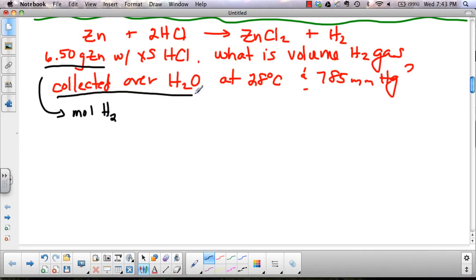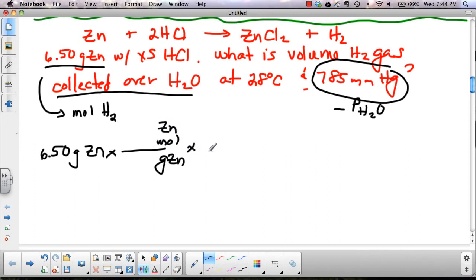And then since we collected it over water, that means we're going to have to take our pressure and subtract the water vapor. So let's do one step at a time. 6.5 grams of zinc. By now, I think stoichiometry is getting to be kind of an easy habit. So grams of zinc to moles of zinc, and moles of zinc to moles of hydrogen. We're going to stop there. So 1, 65.39. And our ratio is 1 to 1. So we're going to make 0.994 moles of hydrogen.